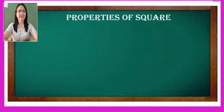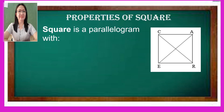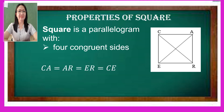Now let me discuss the properties of square. This is our square, C-A-R-E. This is a kind of parallelogram with special, unique properties. First of all, the four sides are congruent. Side CA has equal length measure as side AR, and is also equal to side ER, and also equal to side CE.